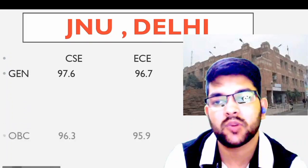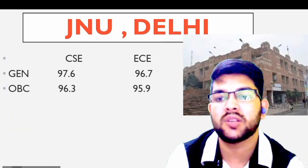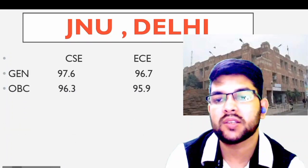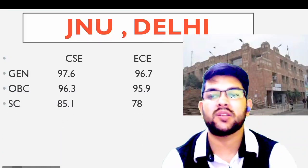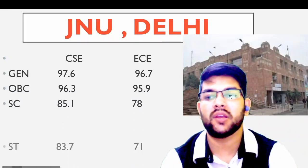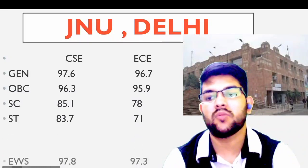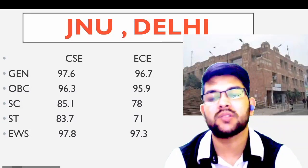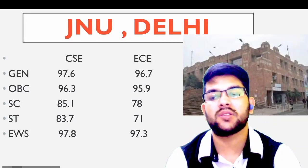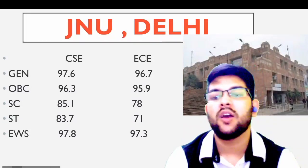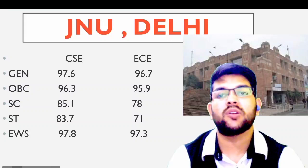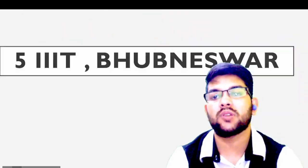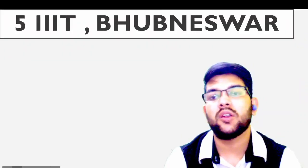Next is JNU Delhi. For General: 97.6 and 96.7; OBC: 96.3 and 95.9; SC: 85 and 78; ST: 83 and 71; EWS: 97 and 97; EC: 97.8 and 97.3 percentile.